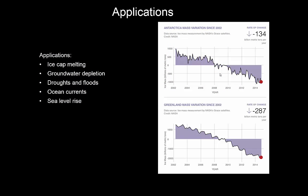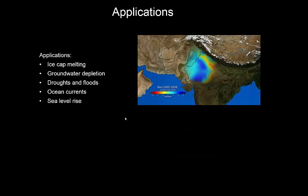Some important applications of this satellite have been developed. One is looking at how much ice is lost at Antarctica — you can see a clear signal of how, since the launch of the GRACE satellites in 2002, there has been a steady depletion and melt of ice at both poles. We can also look at groundwater depletion. For instance, one study looked at how in India, groundwater extraction for irrigation leads to rapidly declining water tables — you can see in the blue colors where most of the extraction has occurred.